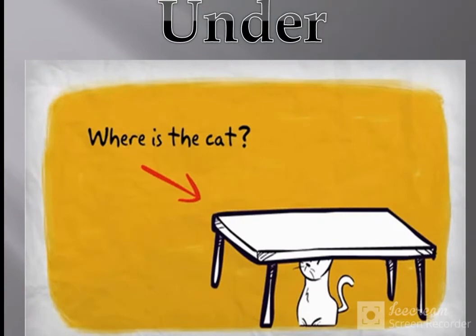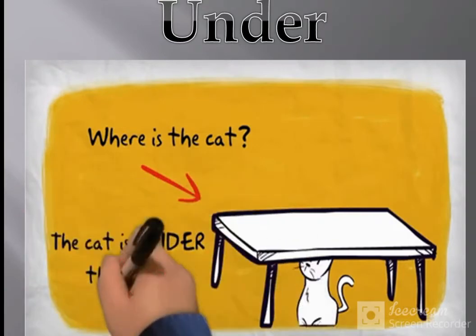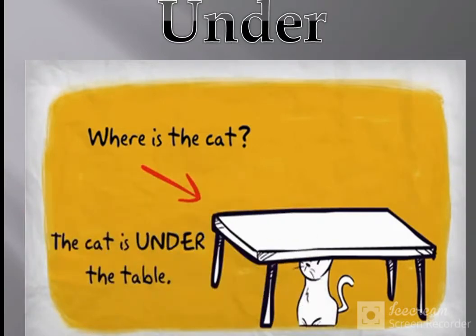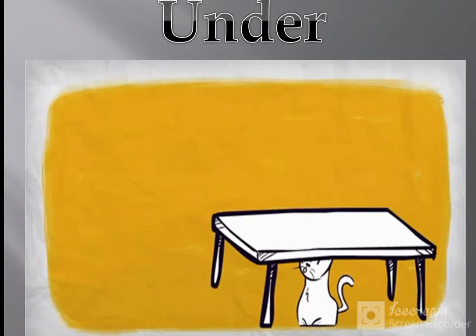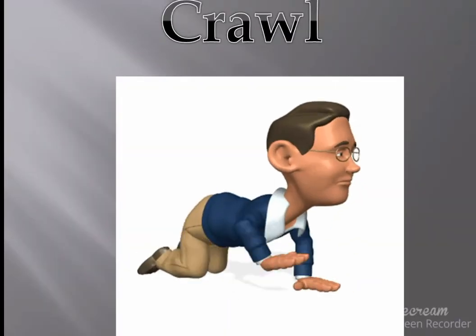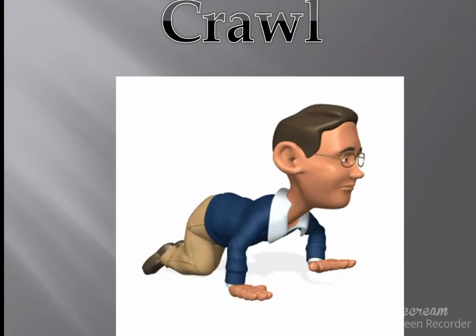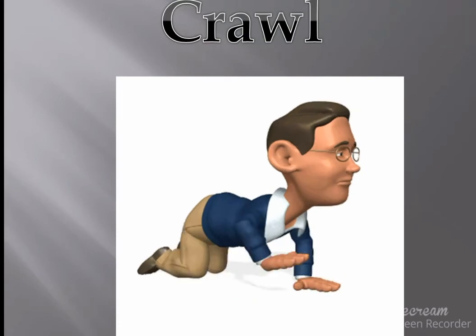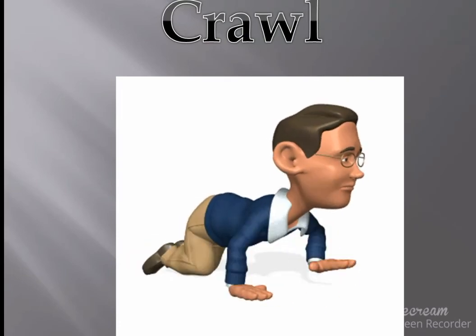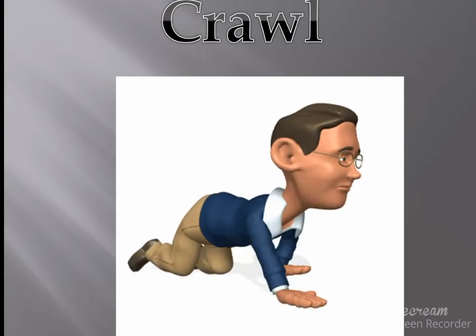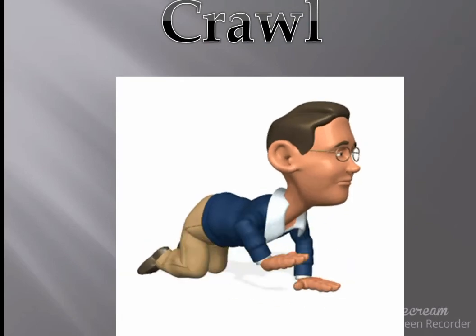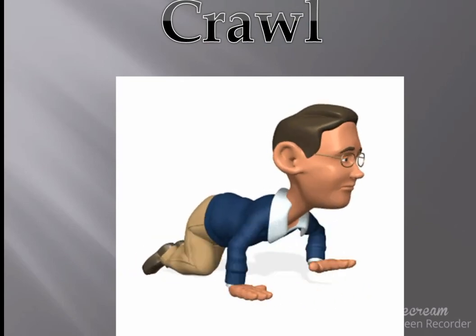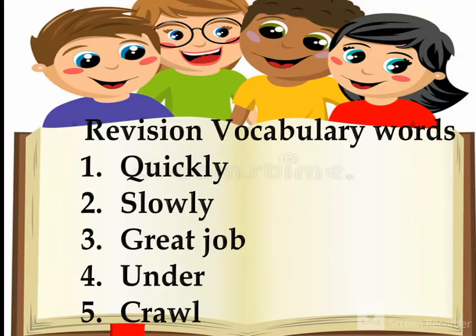The teacher will show a picture of a cat under a table to teach the word 'under'. Our last vocabulary word is 'crawl' — most students already know what crawl means, so the teacher will ask students to perform the crawling action while saying the word 'crawl' again and again.